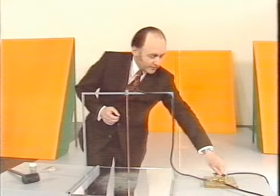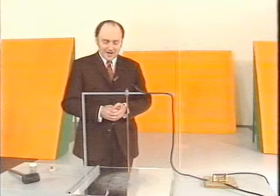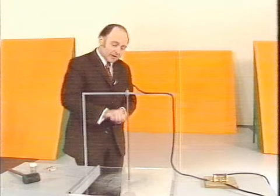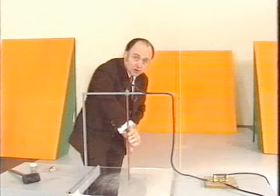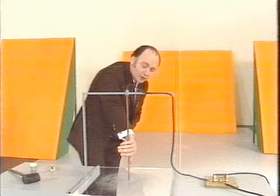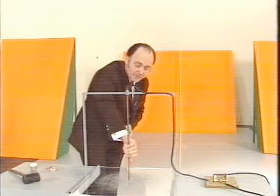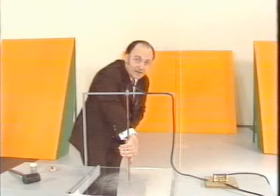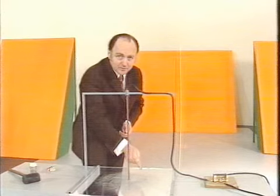Um die Richtung des Magnetfeldes zu bestimmen, gibt es eine ganz einfache Merkregel. Ich brauche nur den Daumen meiner rechten Hand so zu halten, wie der Strom durch den Draht fließt, in unserem Fall also von oben nach unten. Dann umschlingen die übrigen vier Finger meiner rechten Hand, wenn ich sie krümme, den stromführenden Draht in der Richtung, in der das Magnetfeld den Leiter umschlingt.